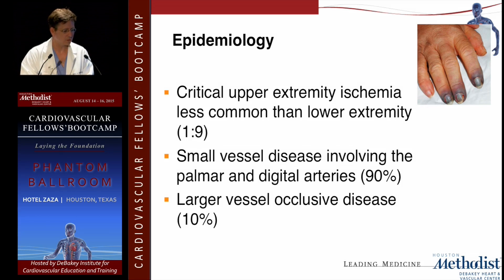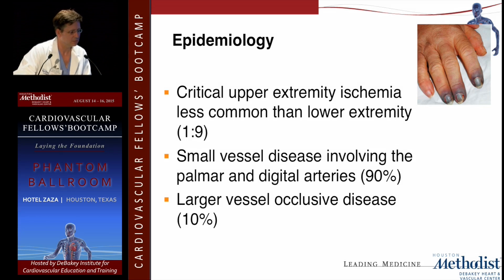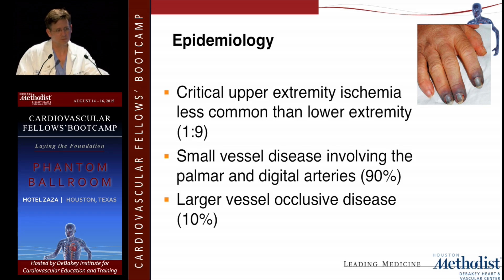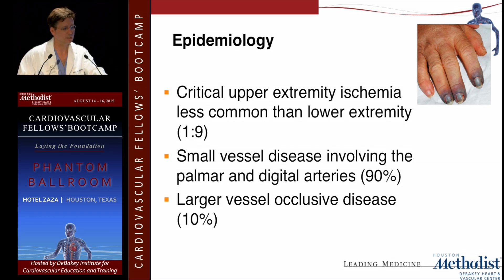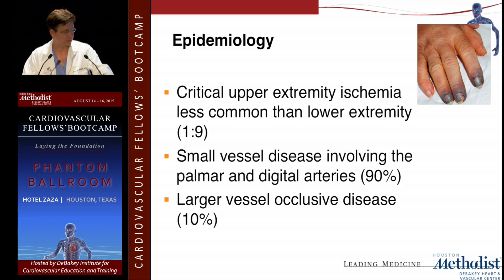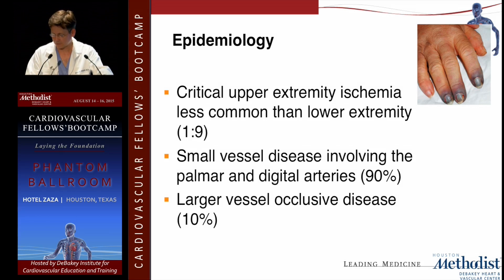Looking overall, the more common causes are vasospastic, vaso-occlusive, large vessel, and small vessel disease. Compared to the lower extremity, upper extremity ischemia is much less common — the ratio given is one to nine. Small vessel disease is more common than large vessel disease. Unless you're talking about arterial TOS or something else, you're usually not dealing with proximal upper extremity vessels. It's more small vessel distal disease, which makes it more challenging from a surgical standpoint. Large vessel occlusive disease is not so common, so typically not a surgical answer for many of these issues.